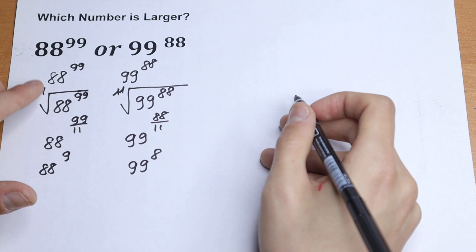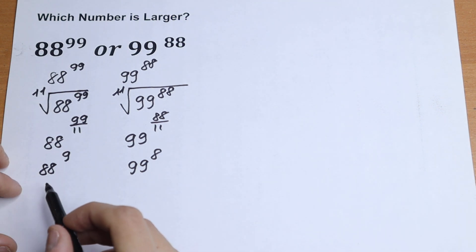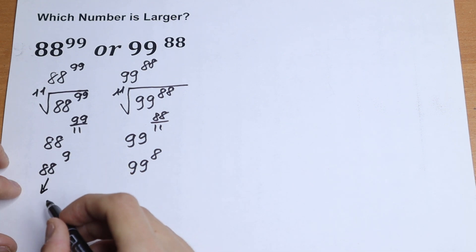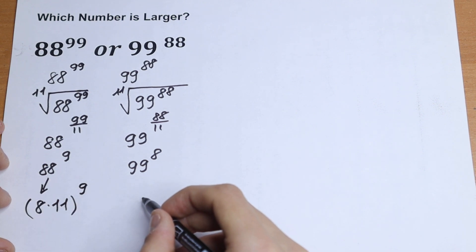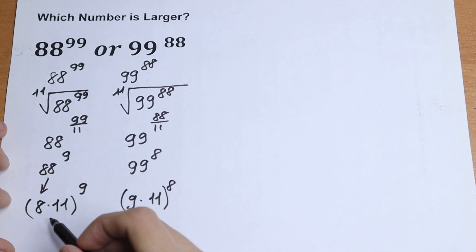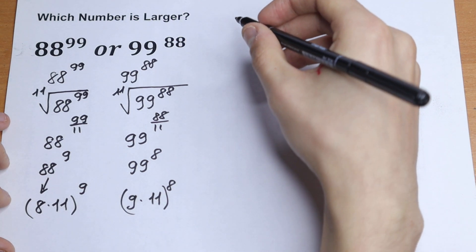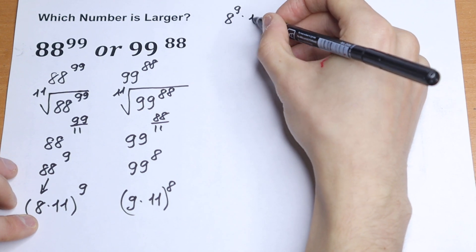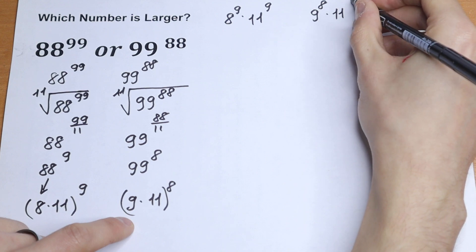That's a really good simplification — we now have smaller powers. Next, we can express 88 as 8 times 11 and 99 as 9 times 11. So we write (8 × 11) to the 9th power on the left and (9 × 11) to the 8th power on the right. Since we have a product raised to a power, we expand to get 8 to the 9th power times 11 to the 9th power on the left, and 9 to the 8th power times 11 to the 8th power on the right.